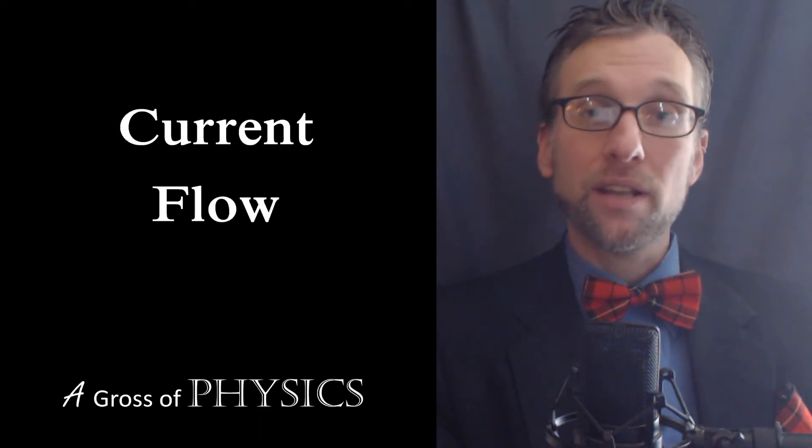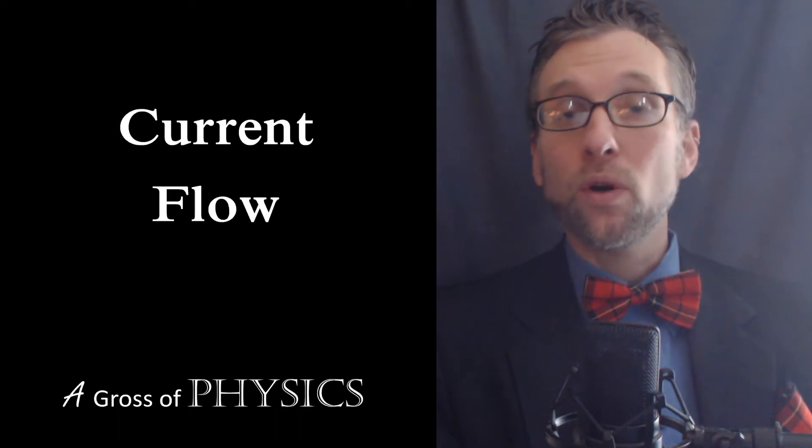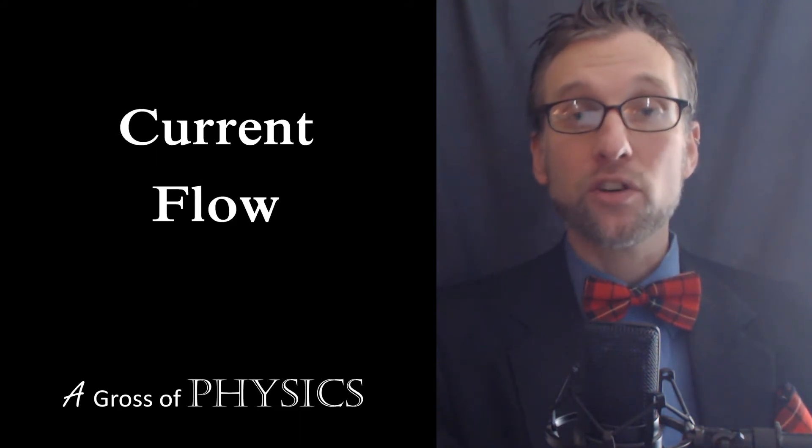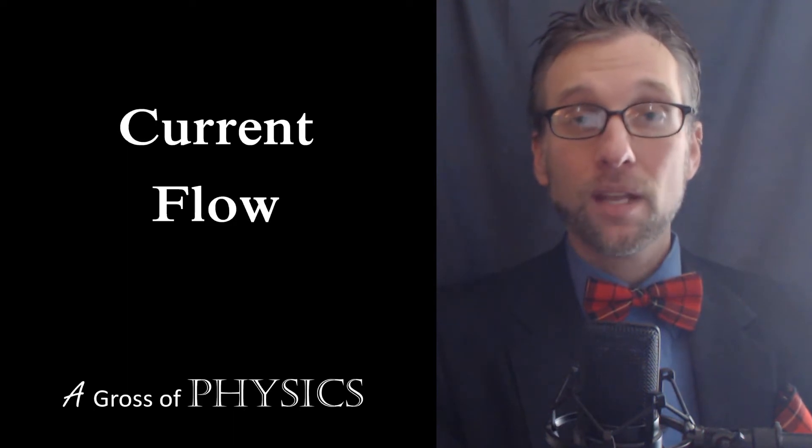The first thing I want to discuss today is the fact that when we have current flowing through a wire, we have two different directions that it could act. We know today that electrons are the ones that move in a circuit. The electrons are going to move away from the negative terminal because of repulsion, and attracted to the positive terminal of the battery because of attraction.